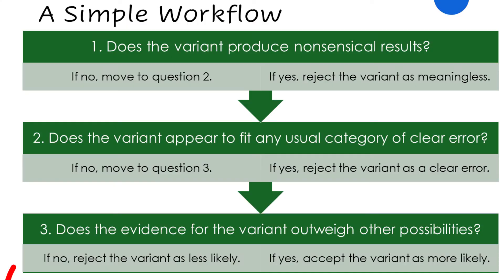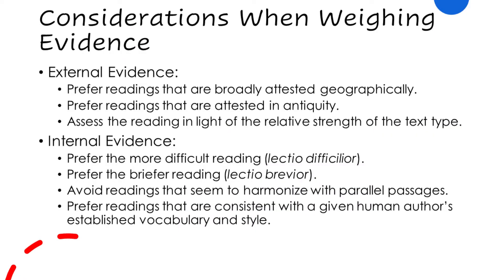If the evidence for the variant is strong, we accept it as more likely. If the answer is no and evidence is more favorable for a different variant, we reject the variant being studied as less likely. Notice we have to weigh evidence here; the word 'prove' does not fit. Here are some considerations scholars use when weighing evidence.